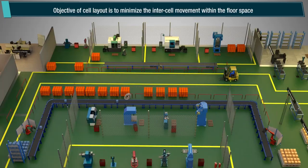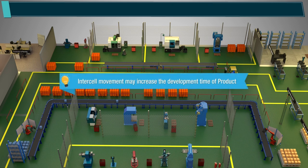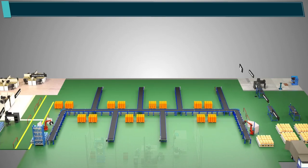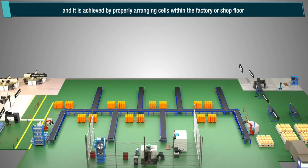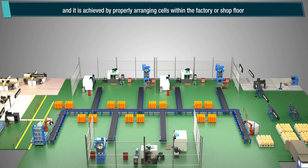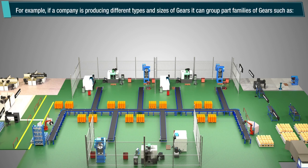The objective of cell layout is to minimize the inter-cell movement within the floor space. This is achieved by properly arranging cells within the factory or shop floor.